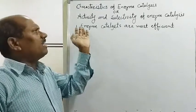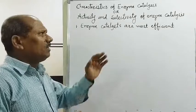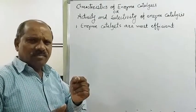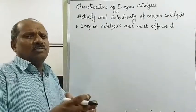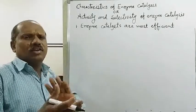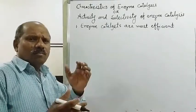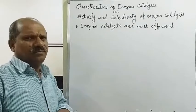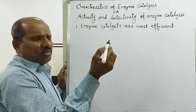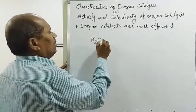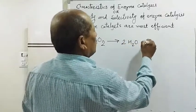The first characteristic is that enzyme catalysts are most efficient. A single molecule of an enzyme is capable of transforming millions of molecules of reactant into product per minute. This is illustrated with the example of the hydrolysis or decomposition of H₂O₂ (hydrogen peroxide): 2H₂O₂ → 2H₂O + O₂.